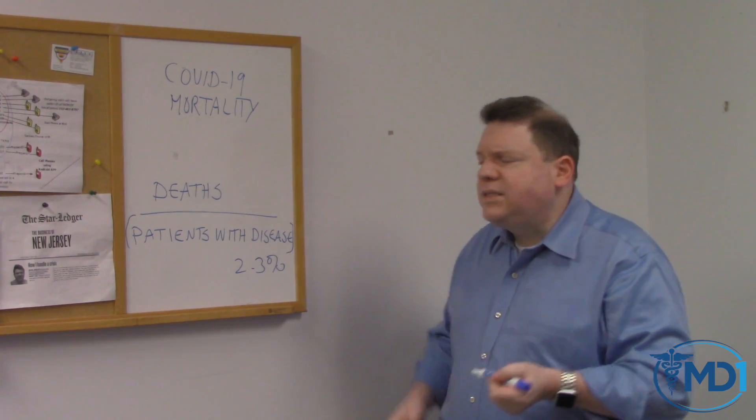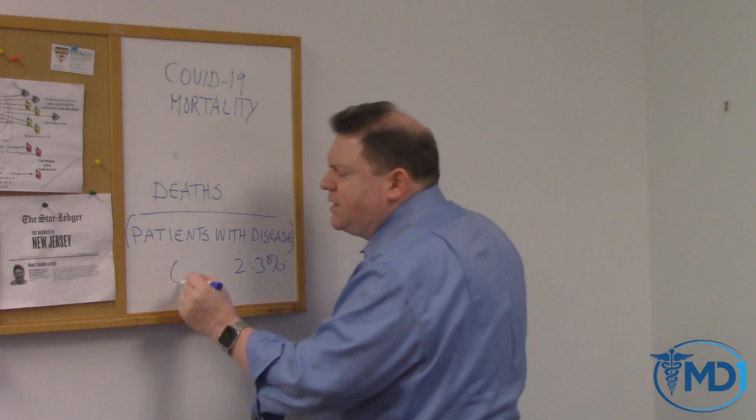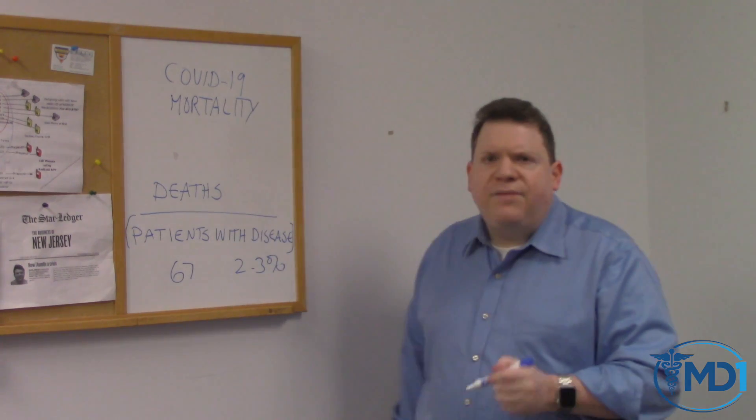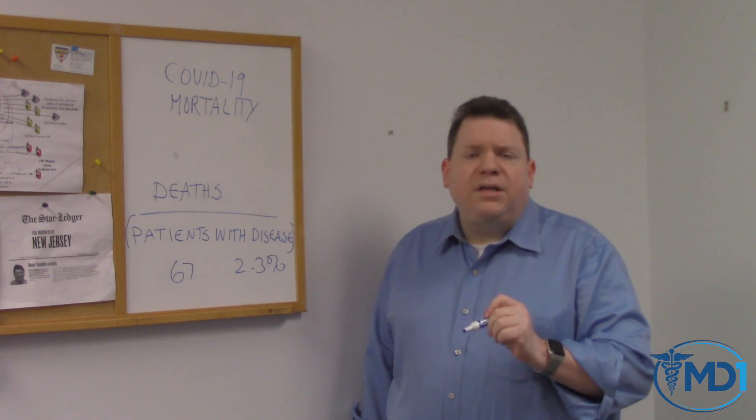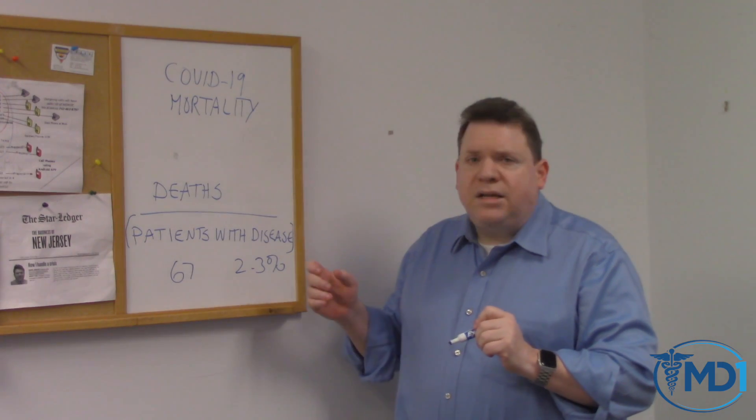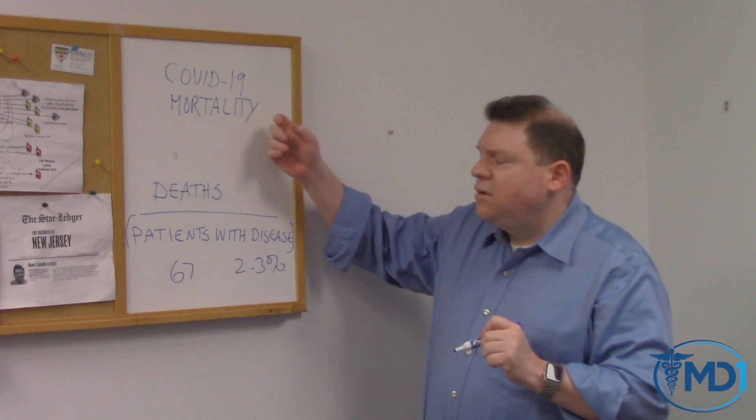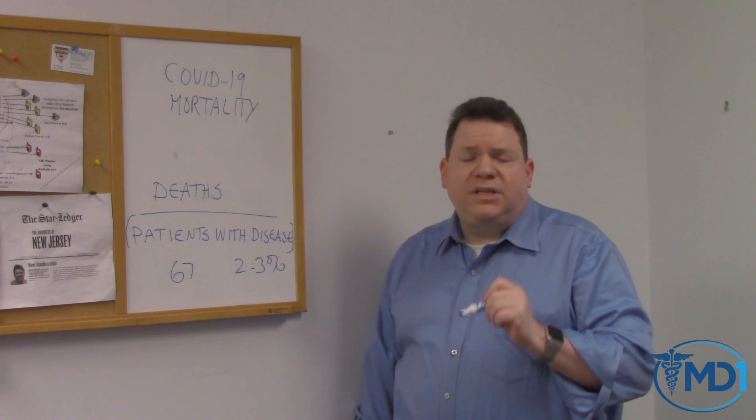Right now in the United States, we have roughly about 67 deaths. That's 67 people out of 337 million people. The overall mortality of COVID-19 with the best statistics as of today is that the number is very, very low.